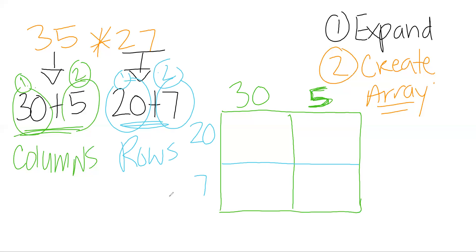There's our array — rows and columns — and this is also the area model. So we get to step three: we're going to multiply our numbers and then add the products.